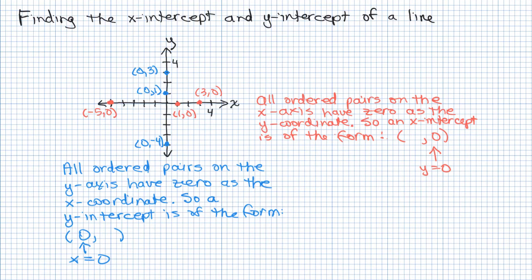So the first thing we're going to notice, if we look at a graph, that all ordered pairs on the x-axis—so if you look at the x-axis, I have three ordered pairs: (-5, 0), (1, 0), and (3, 0). Notice that all of the ordered pairs on the x-axis have 0 for its y-coordinate.